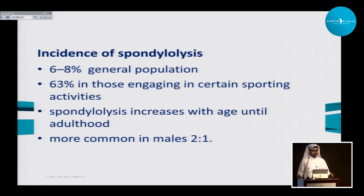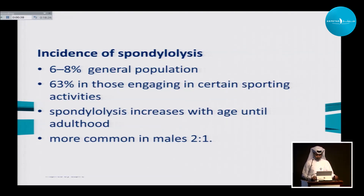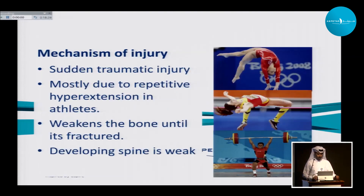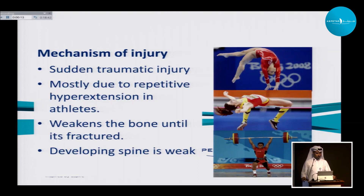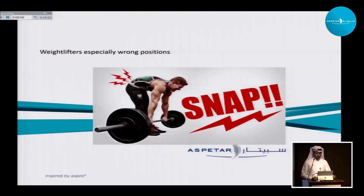You know the famous fracture of Neymar — he actually had it as an adult. It's more common in males than females, with a ratio of two to one. The mechanism of injury can happen due to acute trauma, or mostly due to repetitive hyperextension in athletes, which results in weakening of the already immature bone until it fractures.